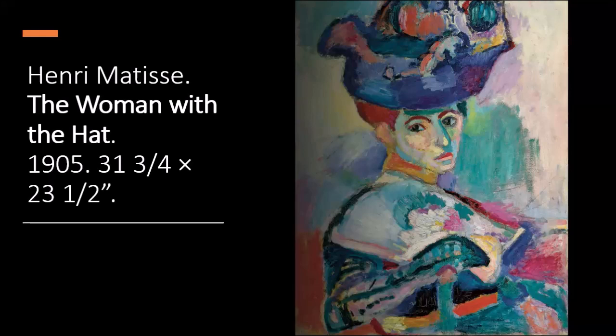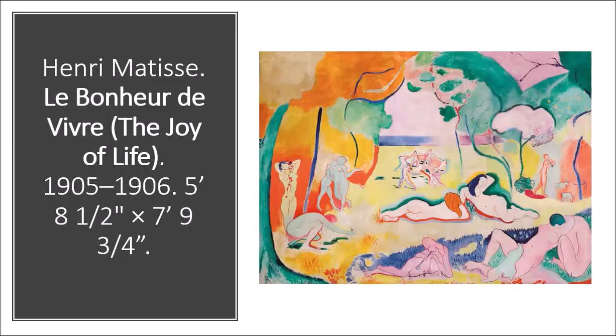Here's another Matisse: Woman with Hat. This is a portrait. It was exhibited at the Autumn Salon in 1905. Again, we have thick swatches of crude, arbitrary, non-naturalistic colors and blunt brushwork that we would see from the Fauves. She is leaning over a chair that her right arm is resting on, and she's just kind of looking at us. We can harken back to other female portraits — our Mona Lisa, for example, and other works that feature a female portrait.